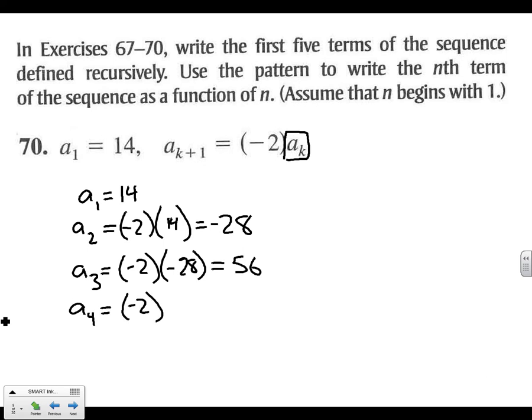We're going to keep doing that for the next two terms. Negative 2 times. What did we get from our last term? 56. Times that by 2, we get a negative 112. And for our fifth term, we'll say negative 2 times whatever we got last, negative 112, and come up with positive 224.